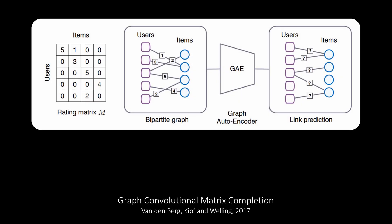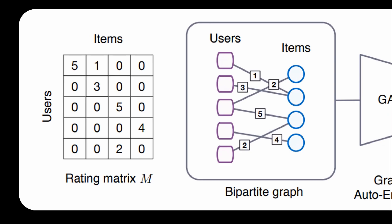One of the earlier works using GNNs comes from van den Berg, Kipf and Welling and is called graph convolutional matrix completion. The rating matrix on the left is converted into a bipartite graph and the edges are enriched with the rating scores.